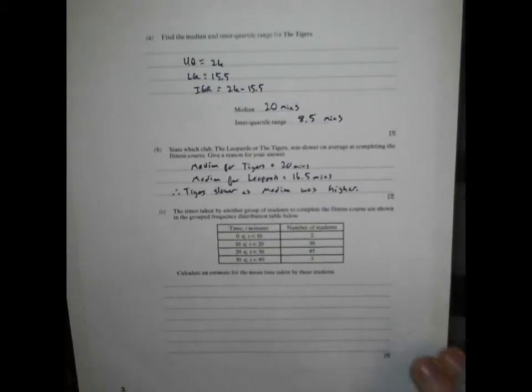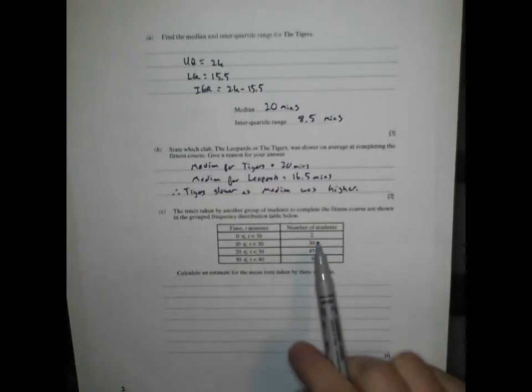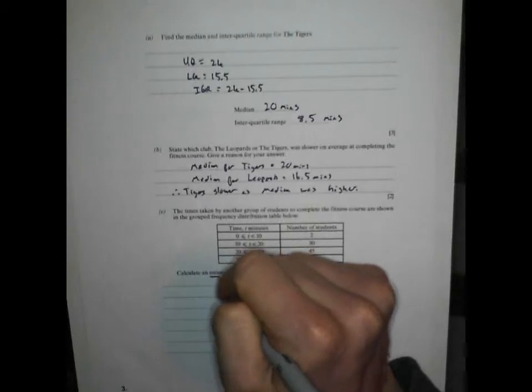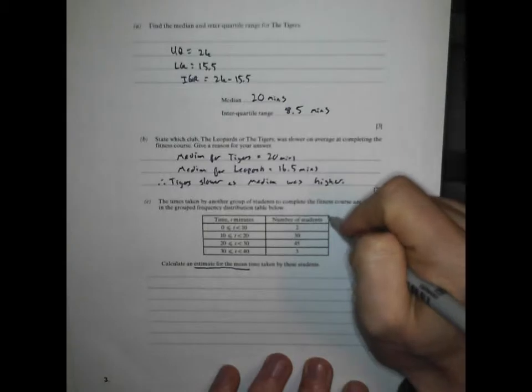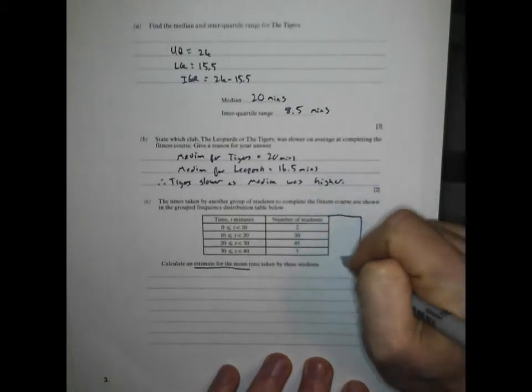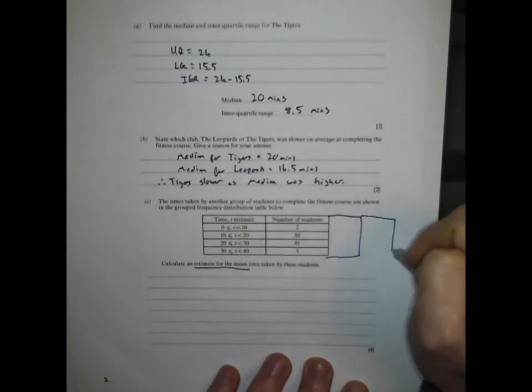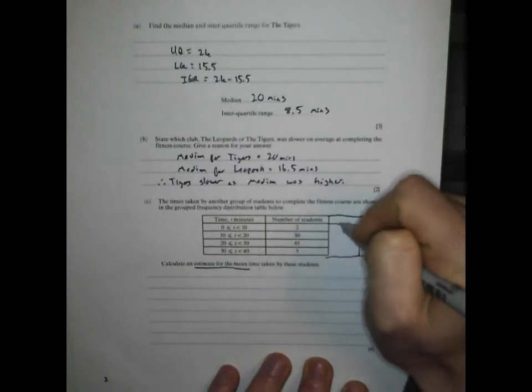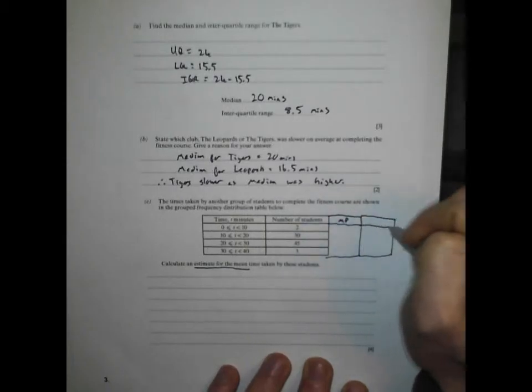Part C: Times taken by another group of students as shown in the table below. Calculate an estimate for the mean. There's those magic words again. It's fusing together a different topic, but hopefully we know how to do this. Group frequency, estimate for the mean. We're going to need a midpoint and we're going to need a midpoint times frequency.